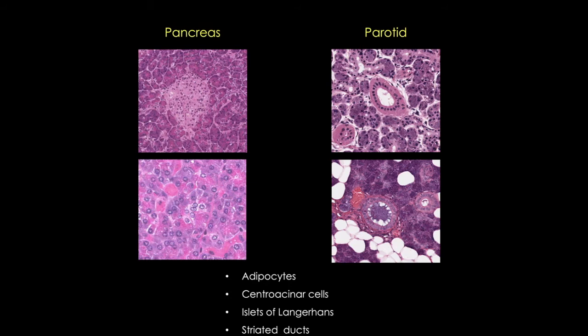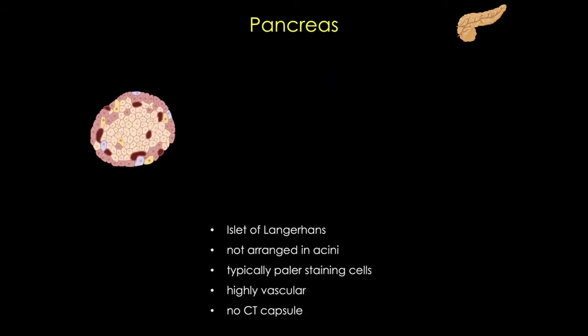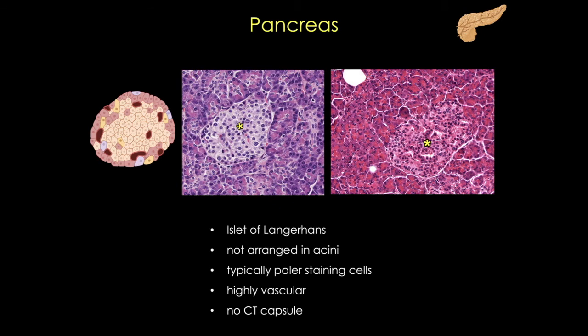We'll start by taking a closer look at the pancreas. By far the easiest way to tell these two organs apart is to look for the pancreatic islets, or the islets of Langerhans. On the left you see a cartoon showing an islet, and here you can see two islets in the midst of the acini of the exocrine pancreas. These islets consist of multiple spherical groups of epithelial cells, essentially embedded as nodules in the exocrine pancreas. The cells are arranged in irregular cords or clumps, and they're surrounded by a rich capillary plexus where the hormones go, and they are almost always paler staining than the acinar cells.